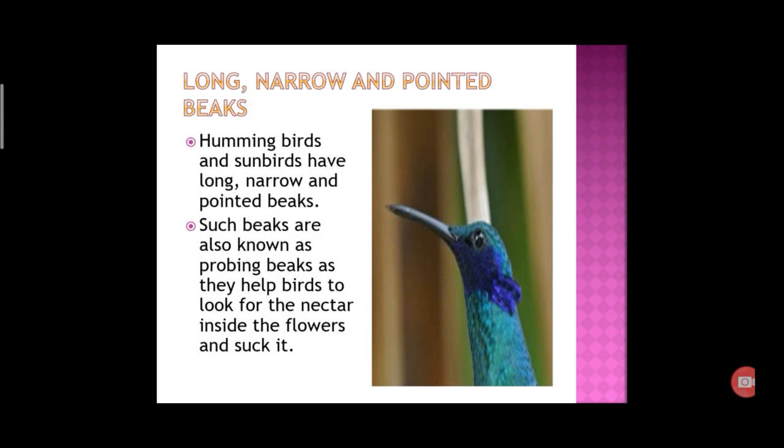Long, narrow and pointed beaks. This type of beak is known as a probing beak, which helps birds to look for nectar inside flowers and suck it. For example, hummingbird and sunbird.